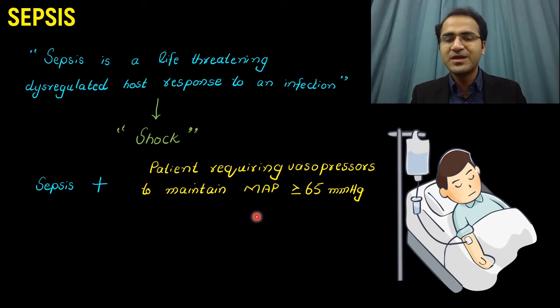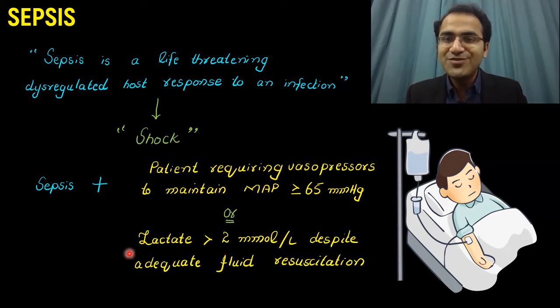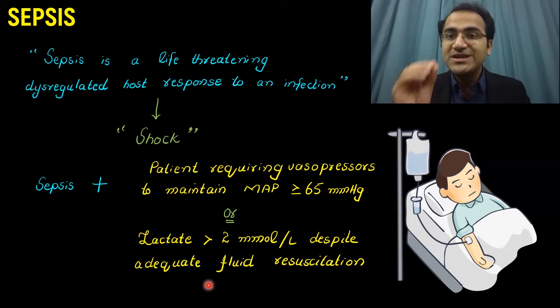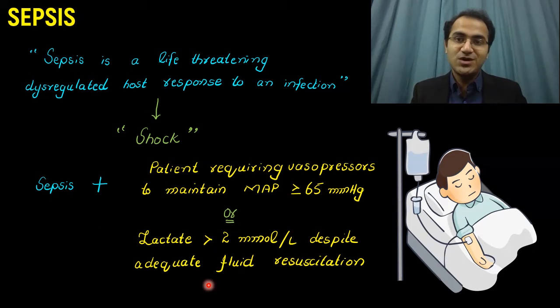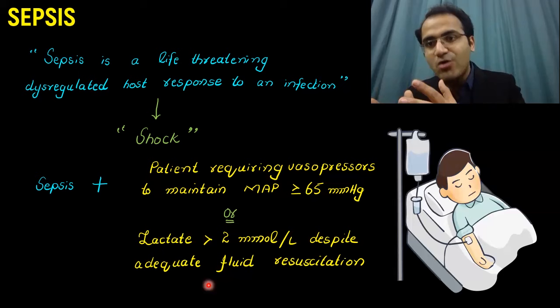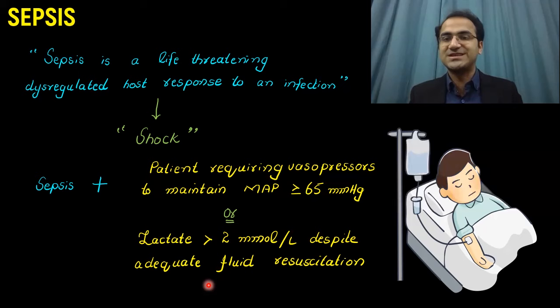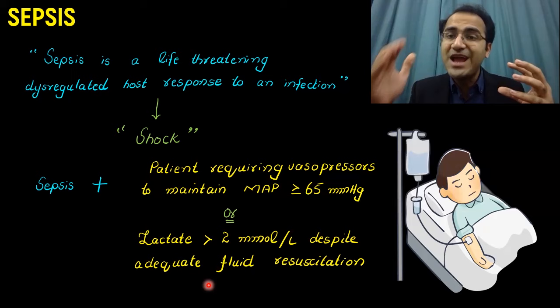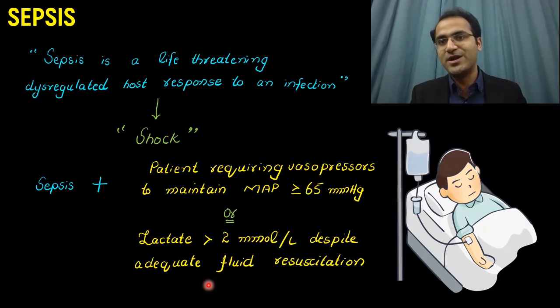Another definition of shock is sepsis in combination with lactate buildup — lactate greater than 2 mmol per liter — despite adequate fluid resuscitation. In shock, the body is unable to maintain blood pressure and therefore unable to perfuse organs. Whenever there is low perfusion, there is low oxygen delivery to those organs, which makes cells go into anaerobic respiration, producing lactic acid. Even when you give fluids from outside to maintain blood pressure, if there is still lactate buildup, that is called shock.